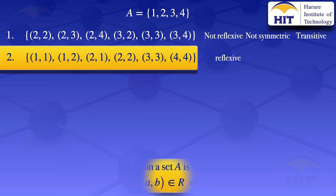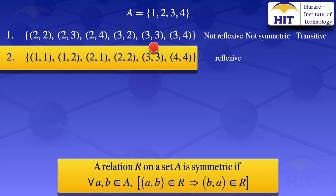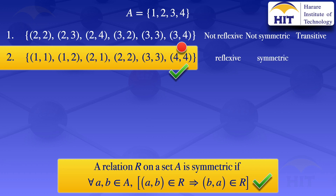Moving on to checking if the relation is symmetric. It is symmetric if for all a, b in A, if (a,b) is in the relation, then (b,a) is in the relation. For (1,1): the reverse is (1,1) — it's there. For (1,2): we check if (2,1) is in — it is. For (3,3): we check (3,3) — it's there. For (4,4): we check (4,4) — it's there. The relation satisfies all conditions, so we conclude it is symmetric.